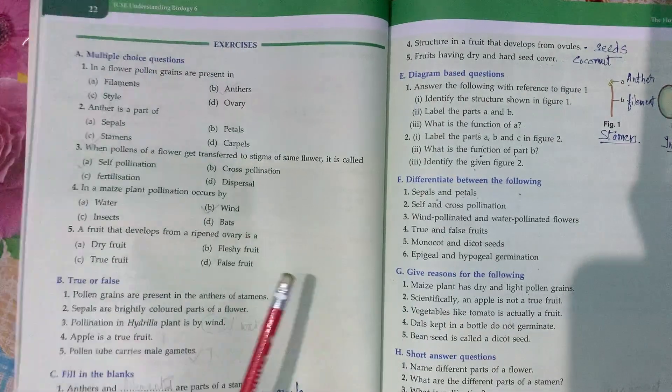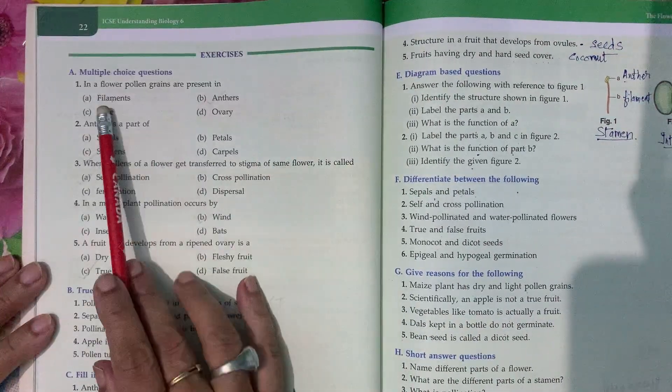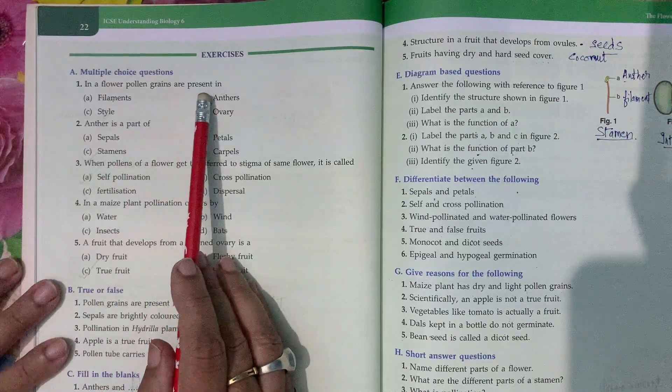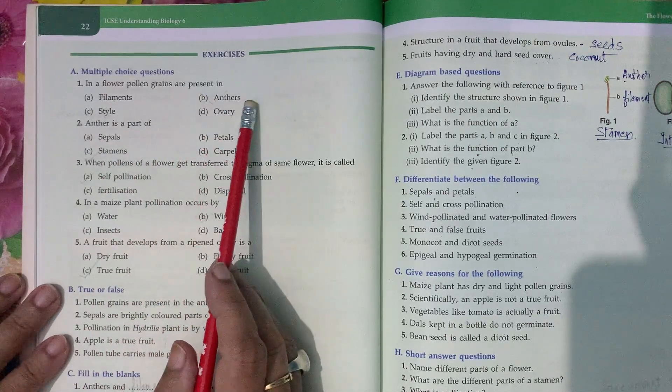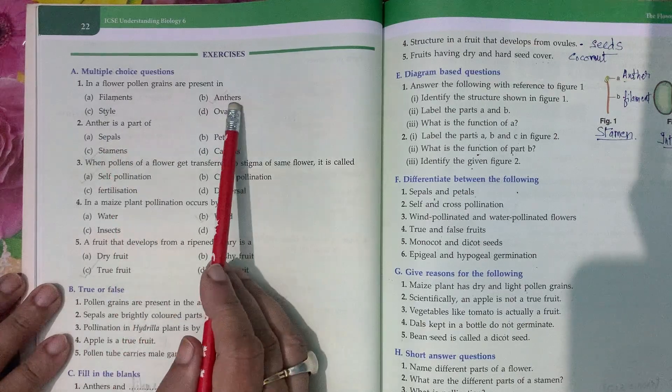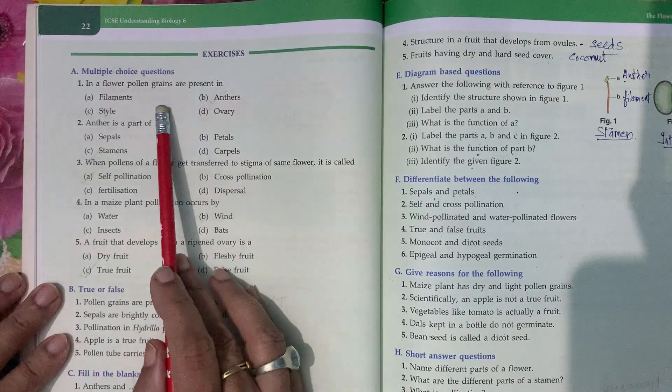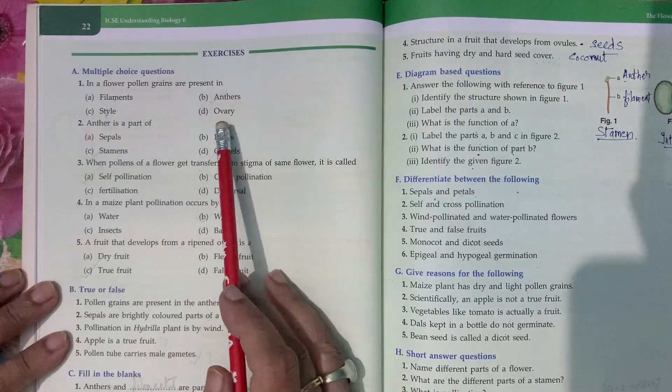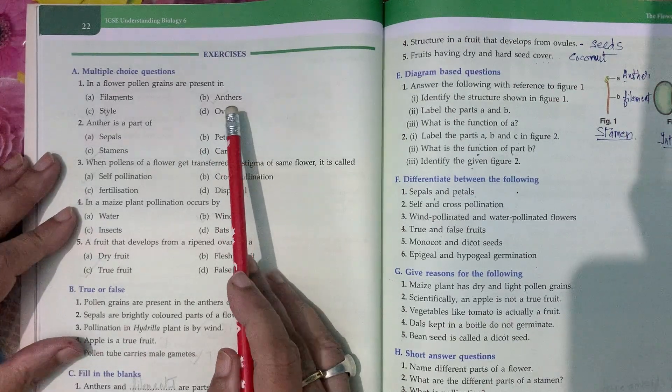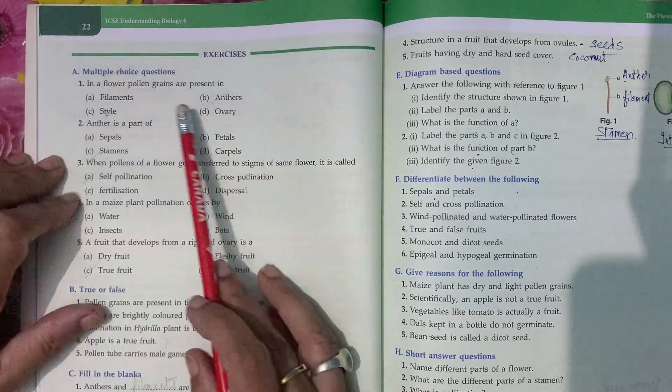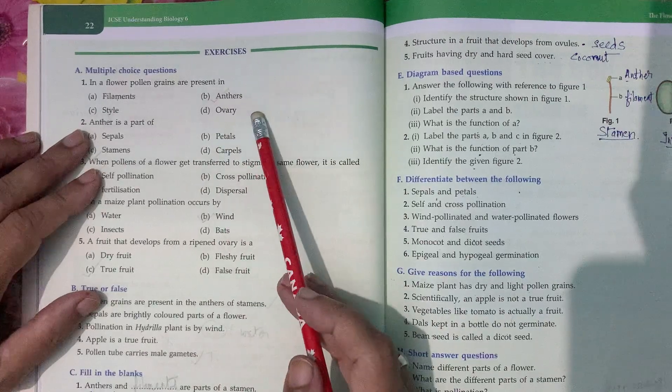First, see here exercises, multiple choice questions. In a flower, pollen grains are present in filament, style, anther, or ovary. Pollen grains are present in anthers.